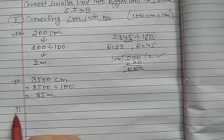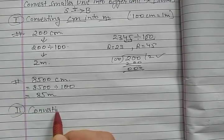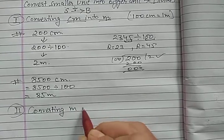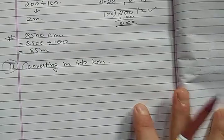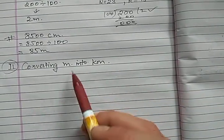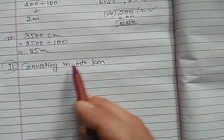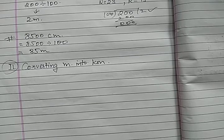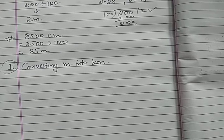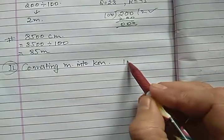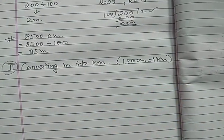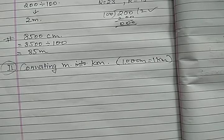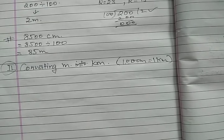Now let us convert meters into kilometers. Again, here we have to convert smaller unit into bigger unit. Meter is the smaller unit and kilometer is the bigger unit. Small to big — what do we have to do? We have to divide. By what? The relation between meter and kilometer. You know that 1000 meters makes 1 kilometer. So that means we have to divide by 1000. जब हम big to small करते थे, तो multiply करते थे — 100 या 1000 से. यहाँ पर भी हमने same वैसे ही करना है, but divide.